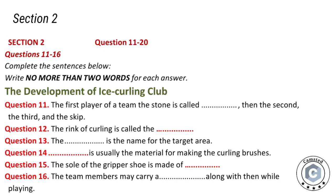The curling players should slide the heavy polished stones, or rocks, across the ice curling sheets towards the house — a circular target marked on the ice. There are several pieces of equipment essential for a curling game. The most important are the curling brush, which is used to sweep the ice surface in the path of the stone, and the curling stone, sometimes called a rock. The brush is usually made of horse hair and the stone is made of granite, mainly coming from Scotland.